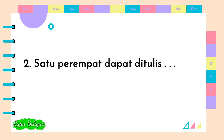Satu per empat dapat ditulis titik-titik-titik. Jawabannya adalah: angka satu sebagai pembilang, kemudian garis horizontal, dan angka empat sebagai penyebut.